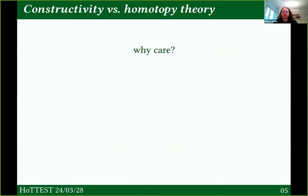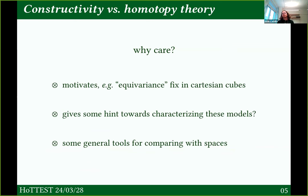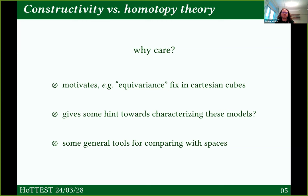Why care? You can understand why nobody wrote a paper about this before, because it's a negative result — we're really interested in the good models. But I think it's good to have it out in the open. For one thing, it motivates this equivariant fibration fix you can do in Cartesian cubical sets. I hope it can give some indication towards a characterization of these model structures that aren't spaces — even though they're not spaces, they might be something interesting. And in working through these counterexamples, I've seen some things that indicate how we could do that.